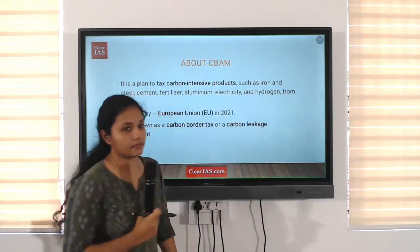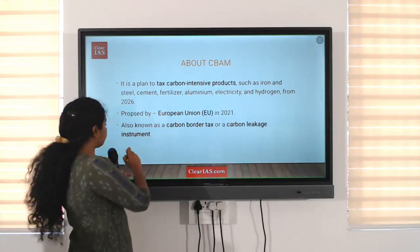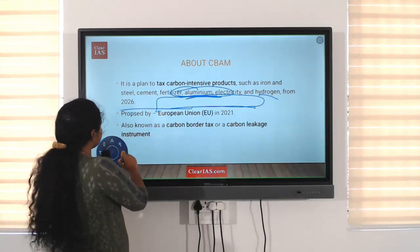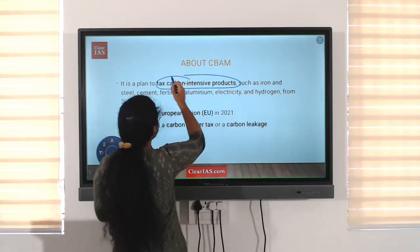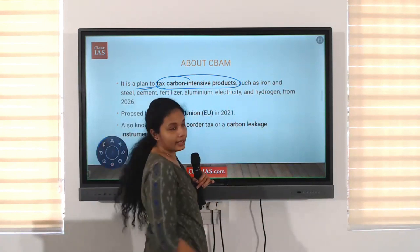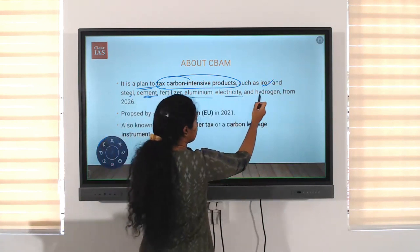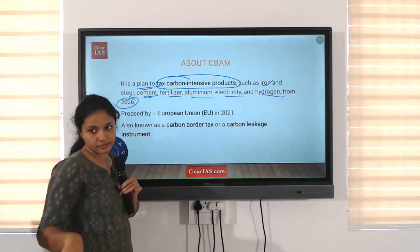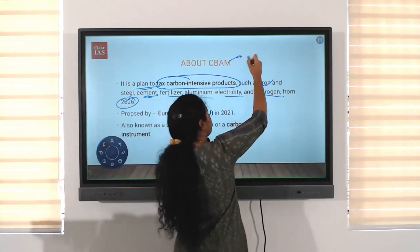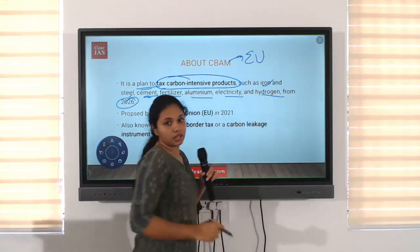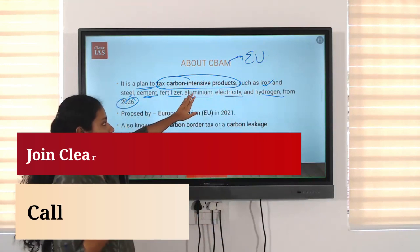So it talks about protecting Indian industry from the Carbon Border Adjustment Mechanism. First we'll analyze it, then we'll see why it is important. CBAM is a plan to tax carbon-intensive products like iron, steel, cement, fertilizer, aluminum, electricity, and hydrogen from 2026.